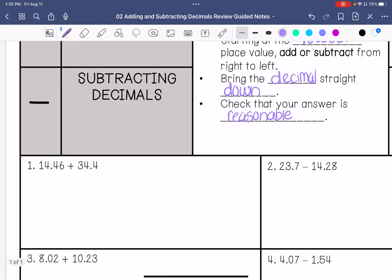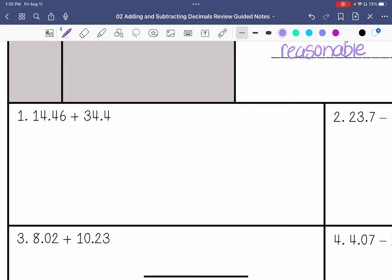Let's do more examples. Number one, we have 14.46 plus 34.4. Add that place value. 6 plus 0 is 6, 4 plus 4 is 8, 4 plus 4 is 8, and 3 plus 1 is 4. And then bring down that decimal point. So our answer is 48.86.